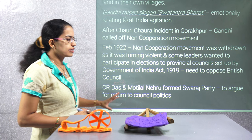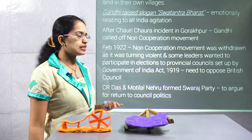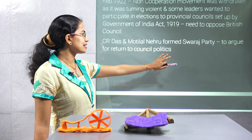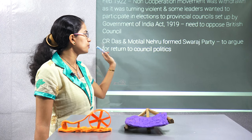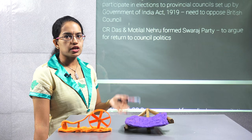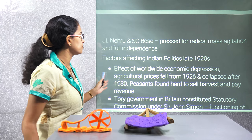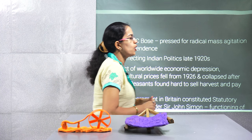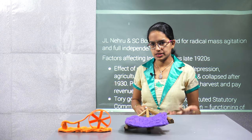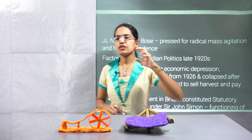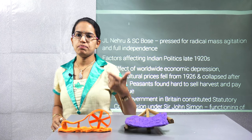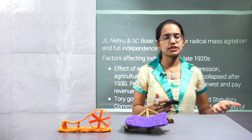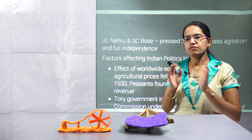Now there were two groups. One was led by C.R. Das and Motilal Nehru, who formed the Swaraj Party and argued for a return to council politics. However, the other group — under Subhash Chandra Bose and Jawaharlal Nehru — talked about radical mass agitations. There were some important developments that took place post the non-cooperation movement.